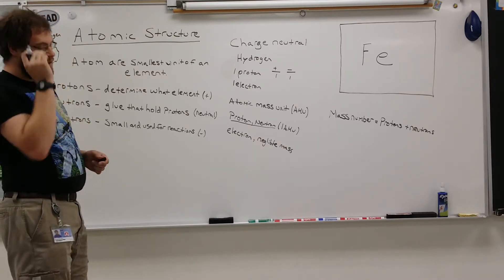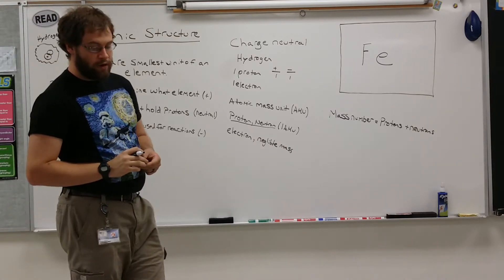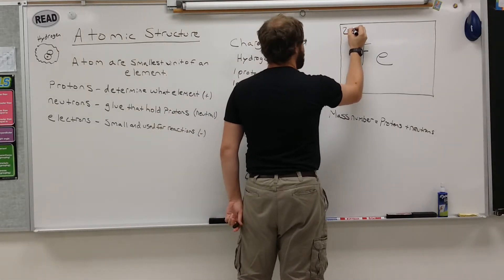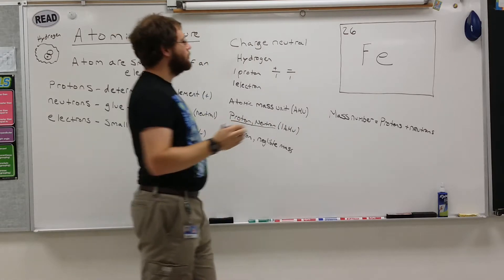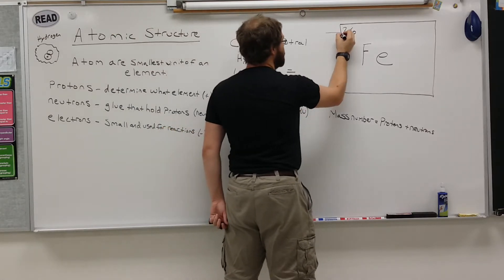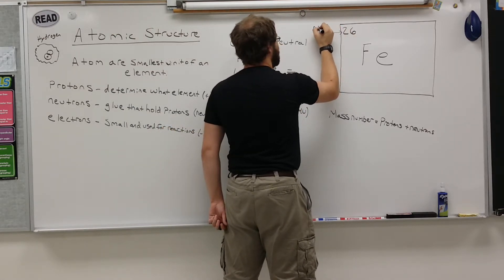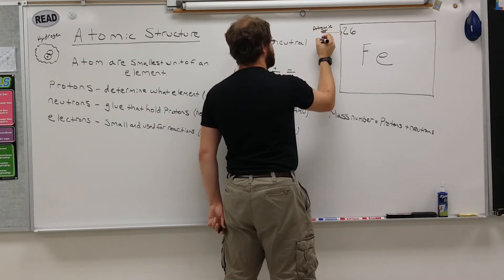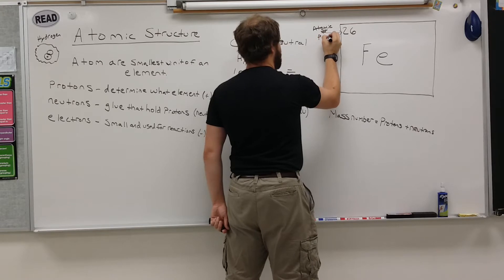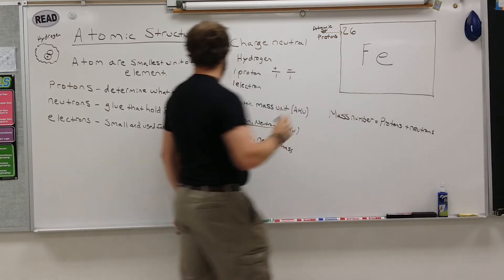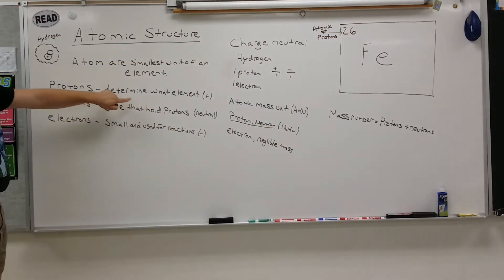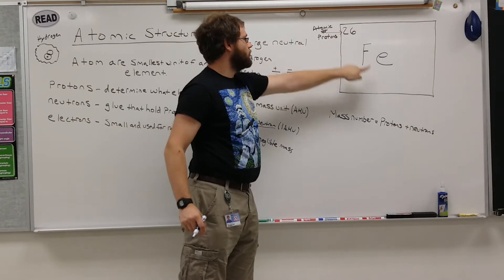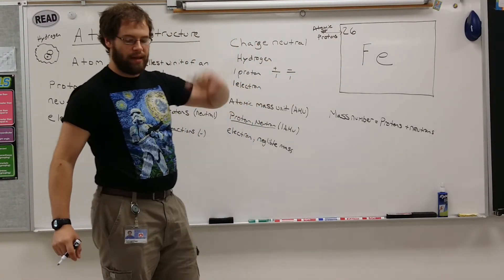So now if you look at any standard periodic table, the first thing you're going to notice is on the top, there's going to be a number. In iron, it's 26. That number is called the atomic number, and the atomic number is how many protons there are. Protons determine which element you have. There are 26 protons in iron, so iron is chemical number 26, element number 26.